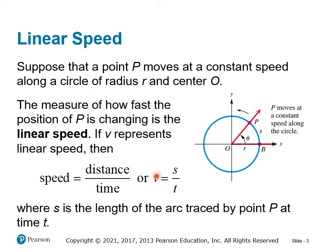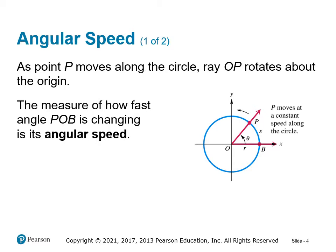We say V, or velocity, or linear speed equals distance. When we're talking about going around a circle, the distance will be the arc length S over any time t. That's an important formula — make sure you put it in your notes.